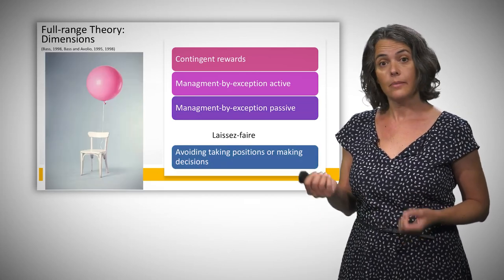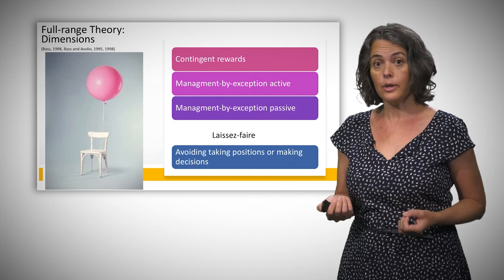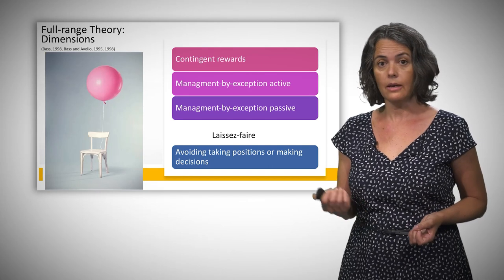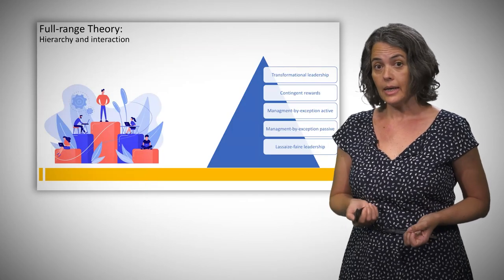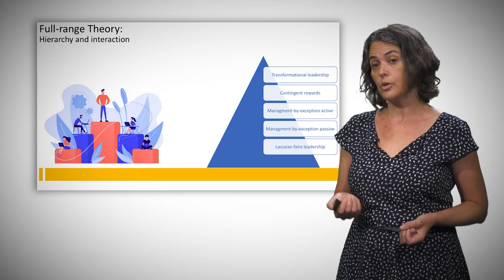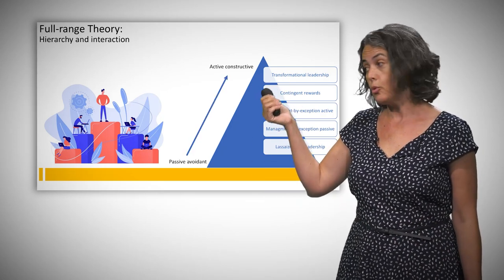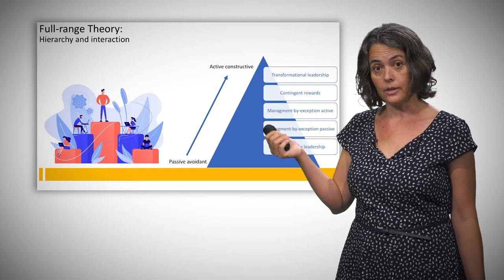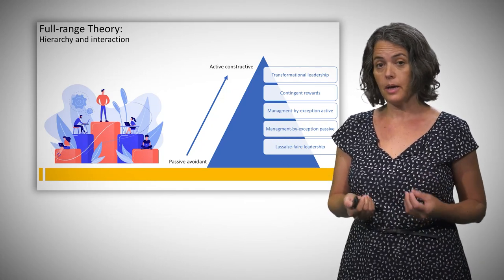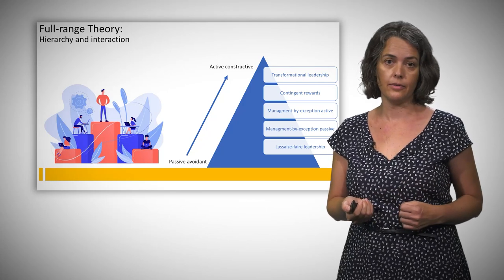Finally, laissez-faire leadership includes avoiding taking positions or making decisions. Empirical studies define a hierarchy related to outcomes, ranging from passive avoidant leadership to active-constructive. In particular, the four dimensions of transformational leadership have been identified as the best predictors of effectiveness.